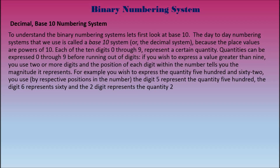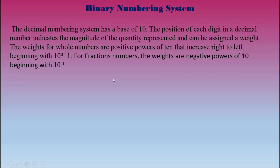For example, if you wish to express the quantity 562: the digit 5 represents 500, the digit 6 represents 60, and the digit 2 represents a quantity of 2. So 562 means 5 times 10 to the power of 2, plus 6 times 10 to the power of 1, plus 2 times 10 to the power of 0. The decimal number system has a base of 10, and the position of each digit indicates the magnitude and can be assigned a weight.